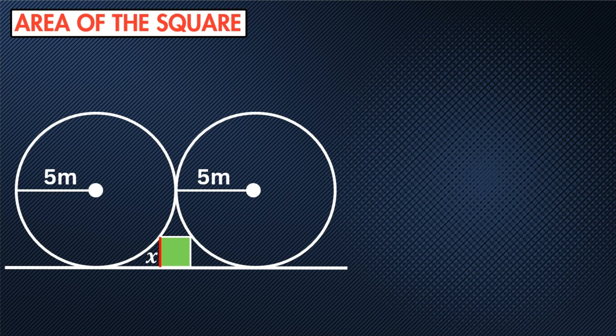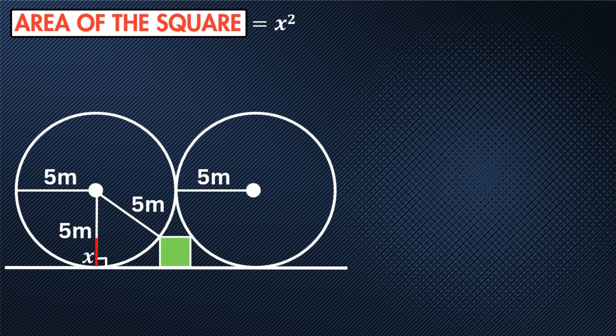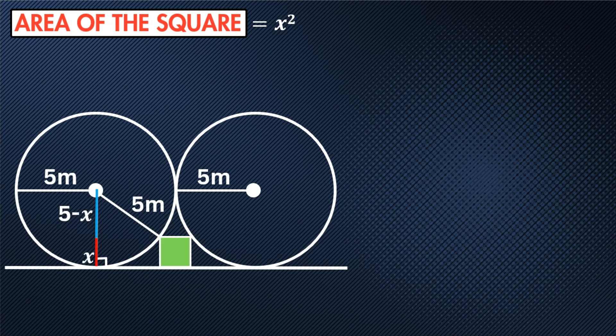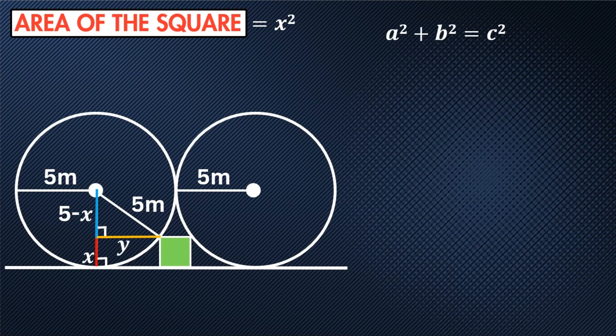We can label one of the sides x, and the area would then be x squared. First things first, we can extend radial lines to the vertex of the square and to the tangent line — this would be at 90 degrees. The portion of this tangent line would then be x and the remainder would be five minus x. We can then extend a horizontal line from the radius to the vertex of the square and call that y. And now we have a right angle triangle.